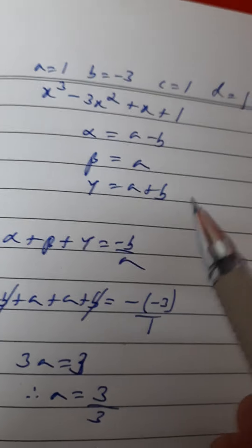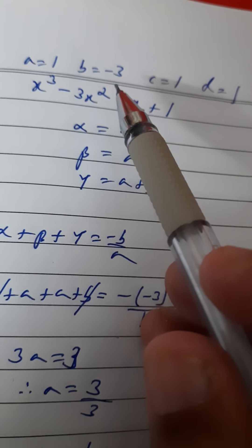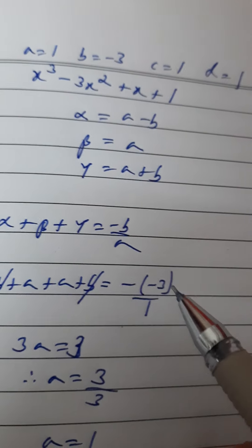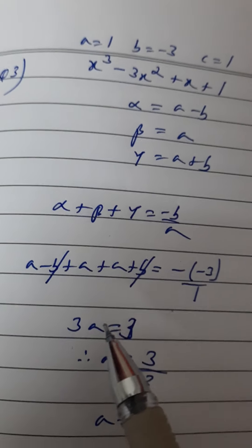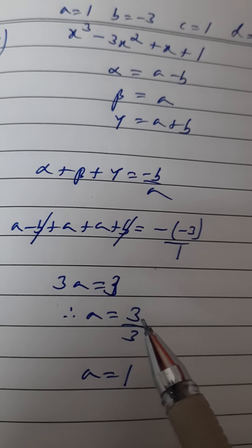We can put here, and -b/a will become minus of -3 upon a value is 1. So -b and +b is getting cancelled. 3a = 3, therefore value of a is 3 upon 3, so a value is 1.